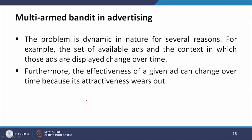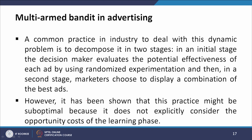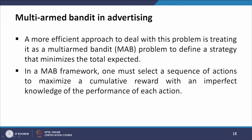The problem is dynamic in nature for several reasons. The set of available ads and the context in which those ads are displayed change over time. Furthermore, the effectiveness of a given ad can change over time because its attractiveness wears out. A common industry practice to deal with this dynamic problem is to decompose it into two stages: first, the decision maker evaluates the potential effectiveness of each ad using randomized experimentation, and second, marketers choose to display a combination of the best ads. However, this practice may be suboptimal because it does not explicitly consider the opportunity cost of the learning phase.